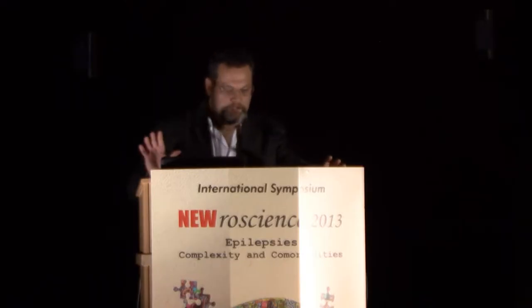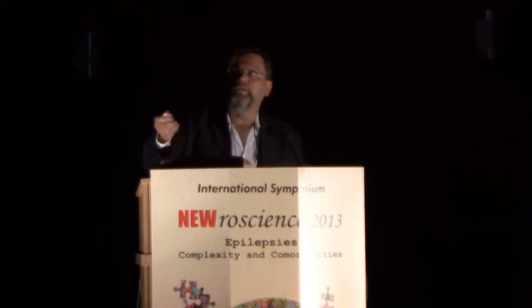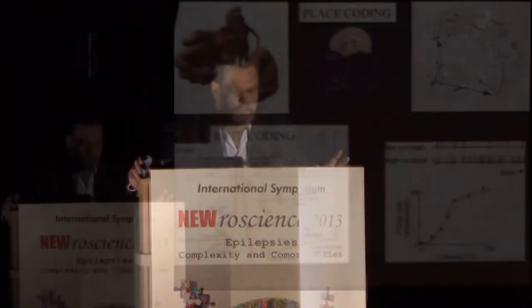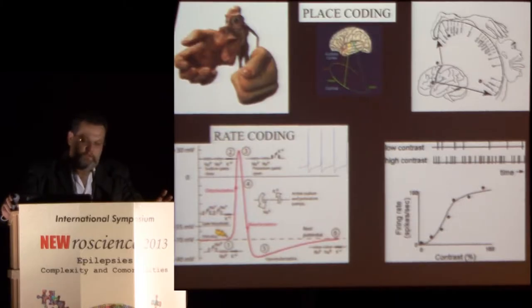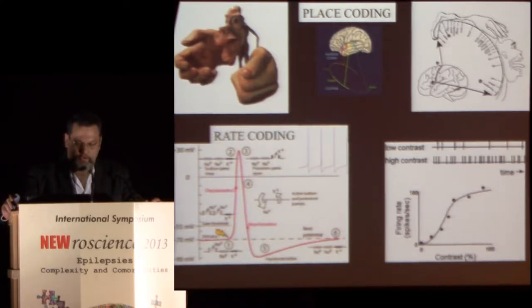How do we code information in the brain? How exactly is information being processed in the central nervous system? Historically, we have two kinds of coding. One is place coding, where specific areas of the brain encode information — quite noticeable in Penfield's Homunculus. In the auditory system, specific frequencies are coded at different regions of area 42, the primary auditory cortex.